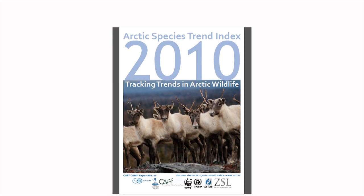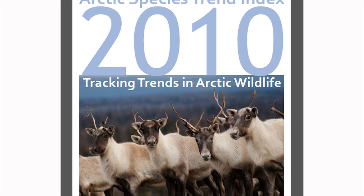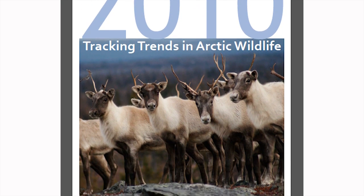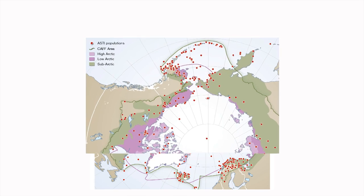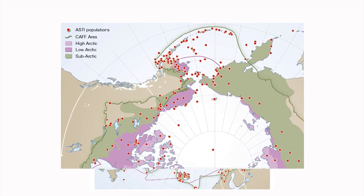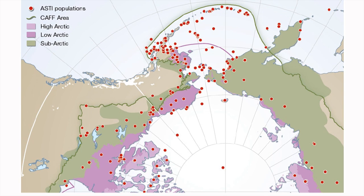The Arctic Species Trend Index, or the ASTEE as we call it, is a key indicator that can actually pull together data that's been collected in the last 60 years from all regions of the Arctic and make some sense of it — getting it into the hands of decision makers so we can make better choices on where we deploy our monitoring efforts and where we should actually be worried.